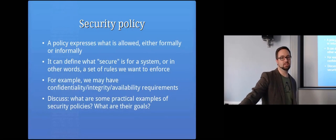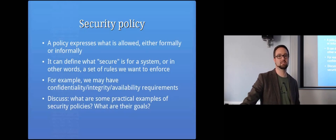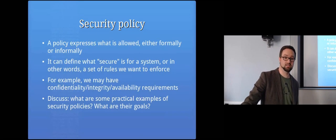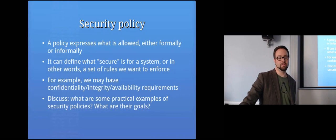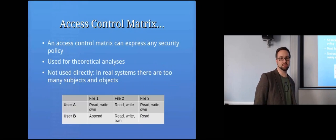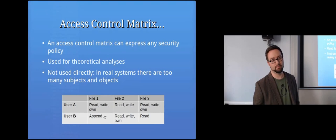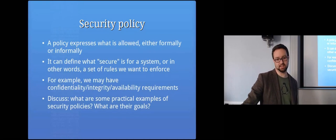A policy defines what's allowed, either formally or informally. A formal policy precisely specifies what users are allowed to do; an informal policy, written in English, can be ambiguous. A security policy defines what's secure and the rules we're trying to enforce. If our policy is this access control matrix and user B finds a way to write to file one, they've subverted our security system and we're in an insecure state. Policies are defined in terms of confidentiality, integrity, and availability.